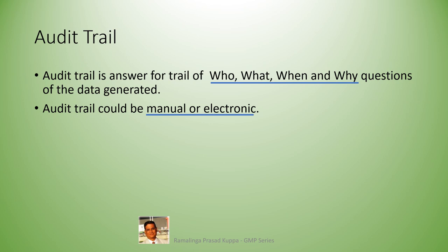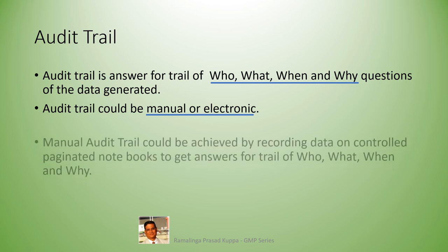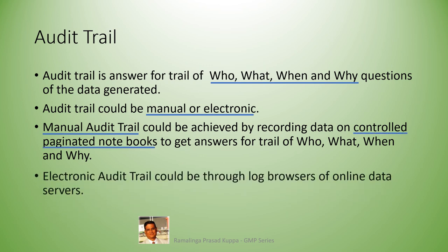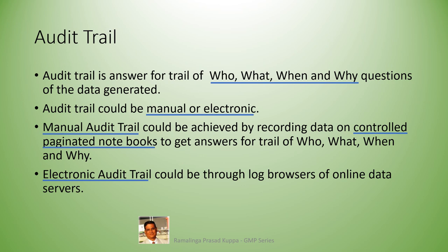It should be understood that audit trail compliance is not only for electronic equipment like HPLC or GC. Manual operated equipment should comply through a controlled paginated logbook. Manual audit trail can be achieved by recording data on controlled paginated notebooks to get answers for trail of who, what, when, and why. Electronic audit trail could be through log browsers of online data servers, which have provision for audit trail on the log browser.